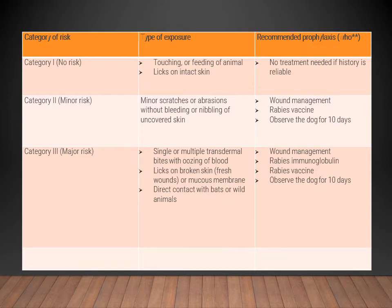Category two is a case of minor risk — when there are minor scratches or abrasions but no bleeding, and no nibbling of uncovered skin. In this case, wound management and rabies vaccine are required, and the dog should be observed for 10 days. However, immunoglobulins — the passive form of prophylaxis — are not needed.